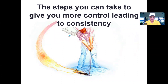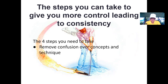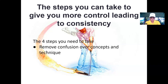Let's look at the four steps to give you more control leading to consistency. The first step is to remove confusion over concepts and technique. There are so many misunderstandings — a concept is a direct idea or vision about how something works. There's a lot of information on technique, and searching YouTube you'll often find conflicting ideas.